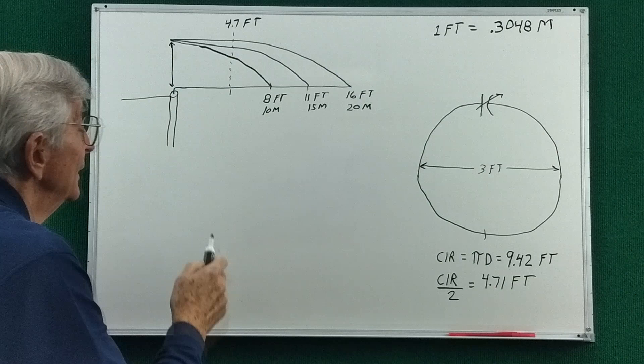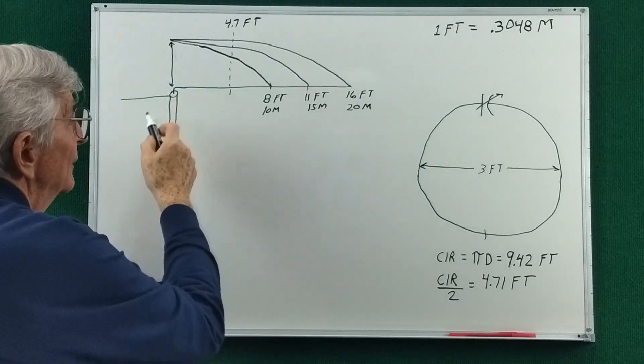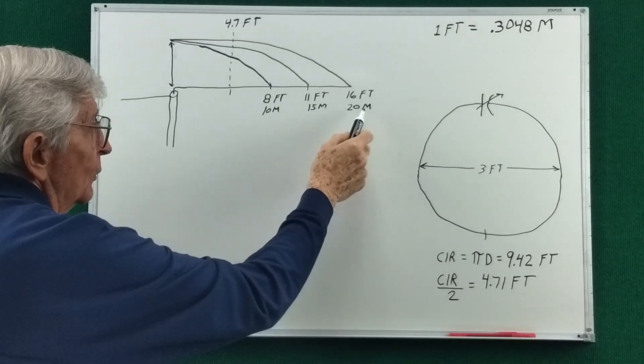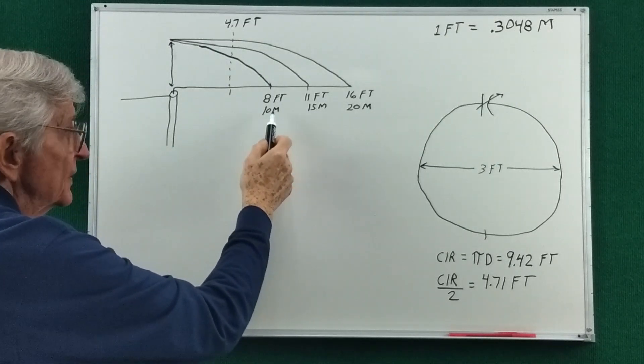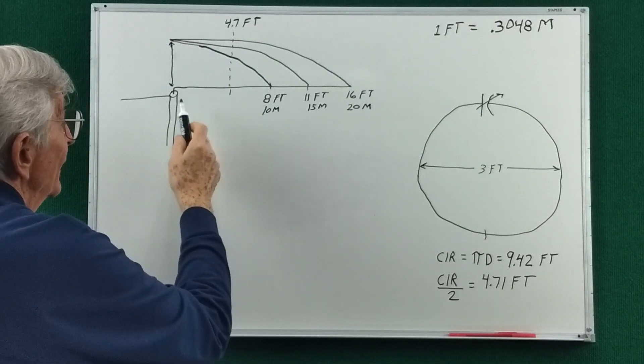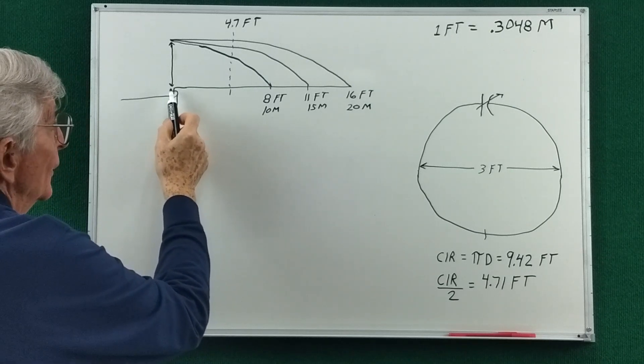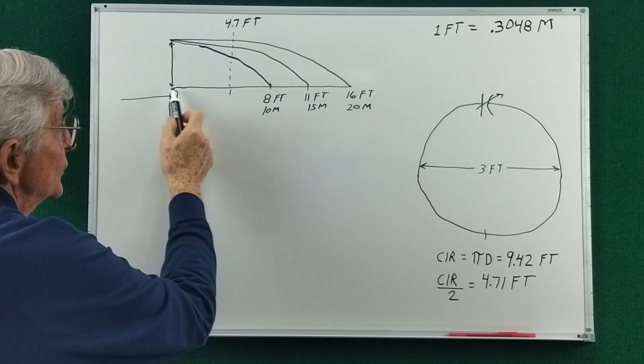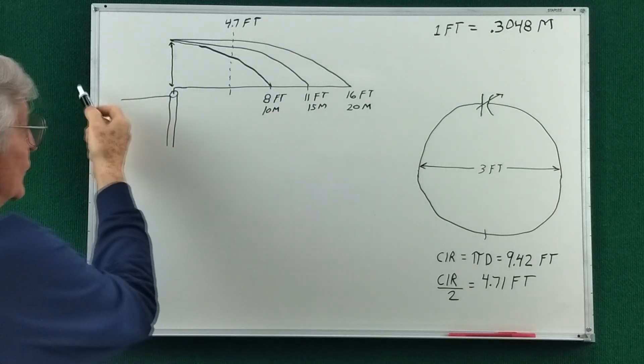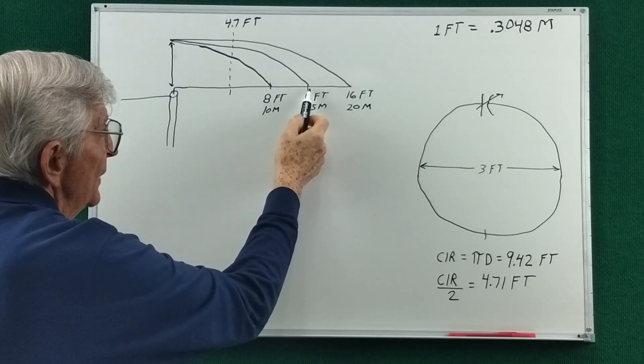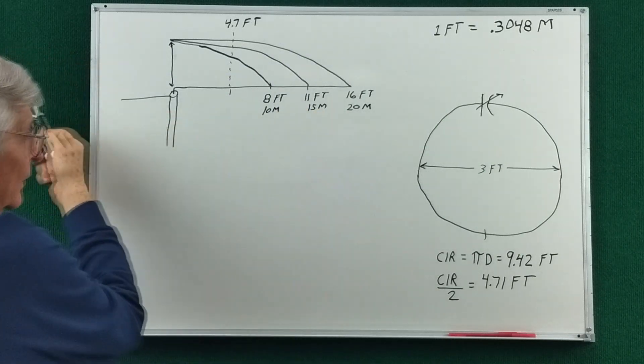Now if we look at a dipole antenna, well, the three bands that we looked at were 20 meters, 15, and 10. And a dipole antenna for 10 meters would be 8 feet long in each direction, and for 15 meters it would be 11 feet on each side, and for 20 meters it would be 16 feet on each side.